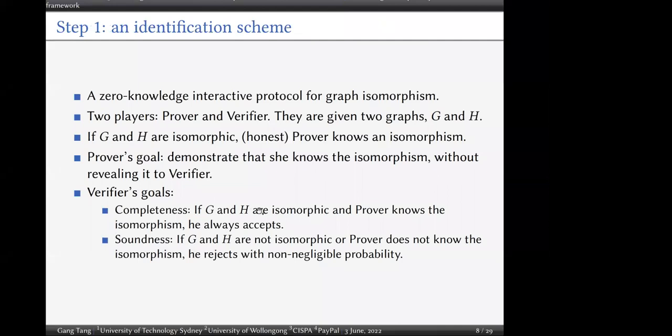Let's look at step one: constructing an identification scheme — a zero-knowledge interactive protocol for graph isomorphism — involving two players, the prover and the verifier. Given two graphs G and H, if G and H are isomorphic, the honest prover knows the isomorphism. The prover's goal is to demonstrate knowledge of the isomorphism without revealing it. This must satisfy completeness — if G and H are isomorphic and the prover knows the isomorphism, the verifier always accepts — and soundness — if G and H are not isomorphic or the prover doesn't know the isomorphism, it rejects with non-negligible probability.